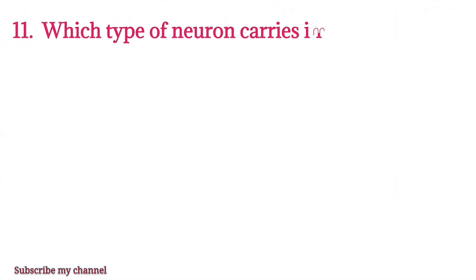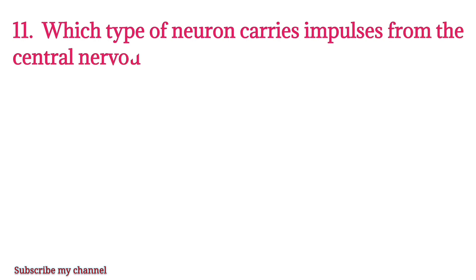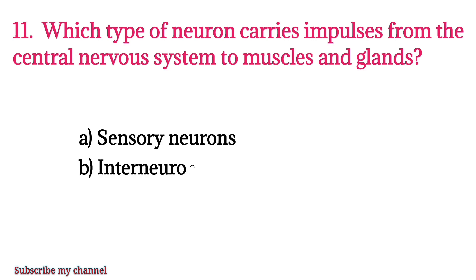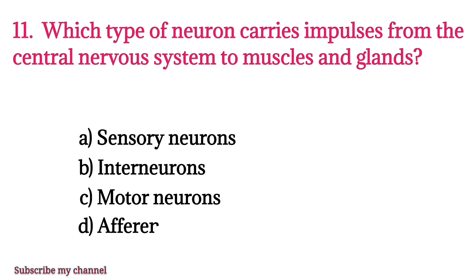MCQ number eleven: Which type of neurons carries impulses from the central nervous system to muscles and glands? Option A: sensory neurons, option B: interneurons, option C: motor neurons, option D: afferent neurons. The right option is option C.